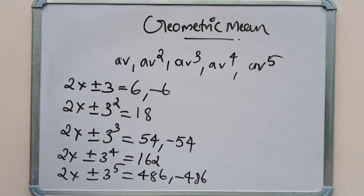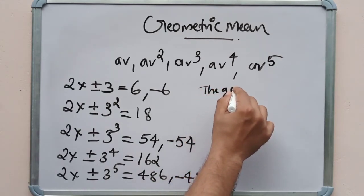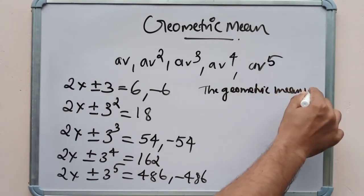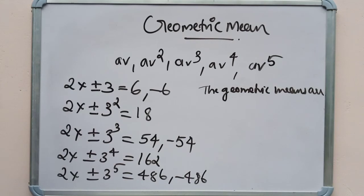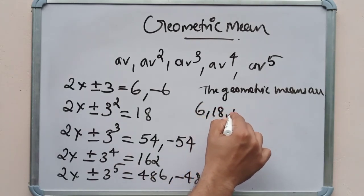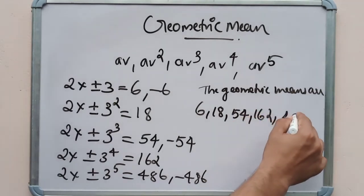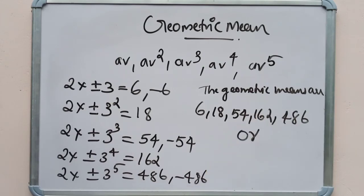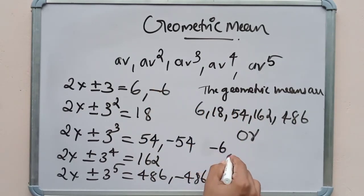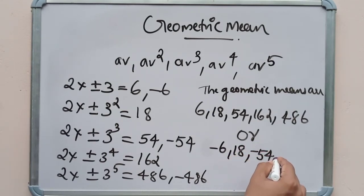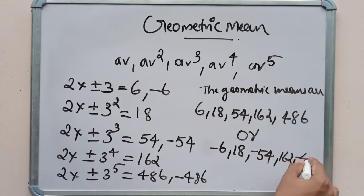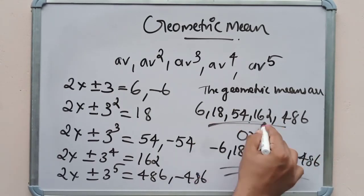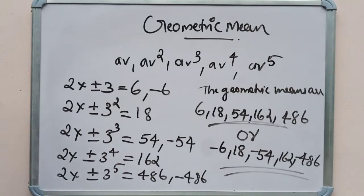So the geometric means are either 6, 18, 54, 162, 486 (when r = 3) or −6, 18, −54, 162, −486 (when r = −3). By this I am concluding my topic. Next we will look at harmonic progression. Thank you.